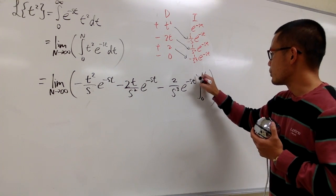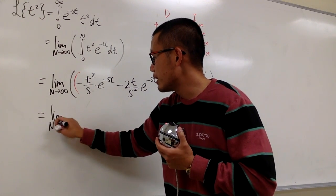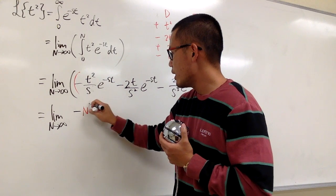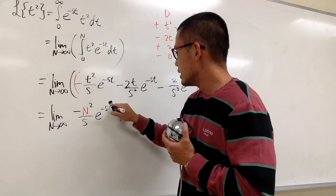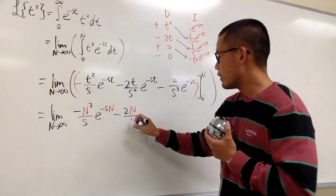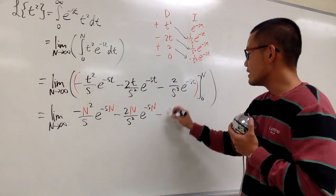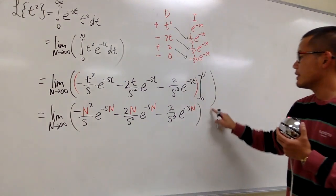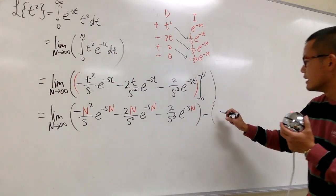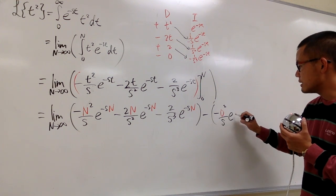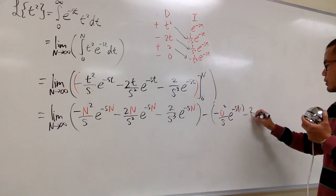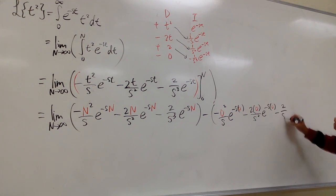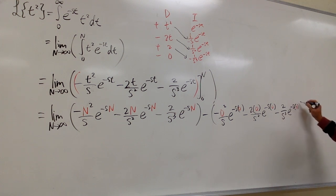Plugging in N for all the t's, we get: negative N squared over s times e to the negative sN, minus 2N over s squared times e to the negative sN, minus 2 over s cubed times e to the negative sN. Then subtracting the result of plugging in 0: negative 0 squared over s times e to 0, minus 2 times 0 over s squared times e to 0, minus 2 over s cubed times e to the negative s times 0.